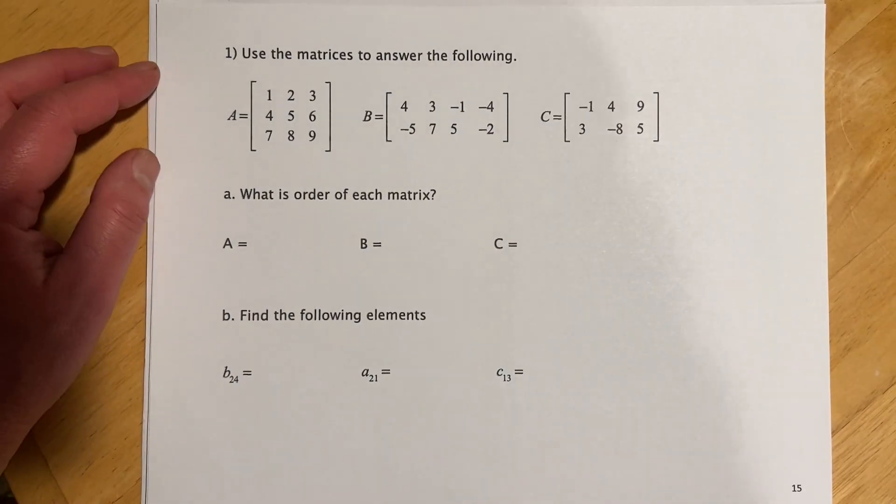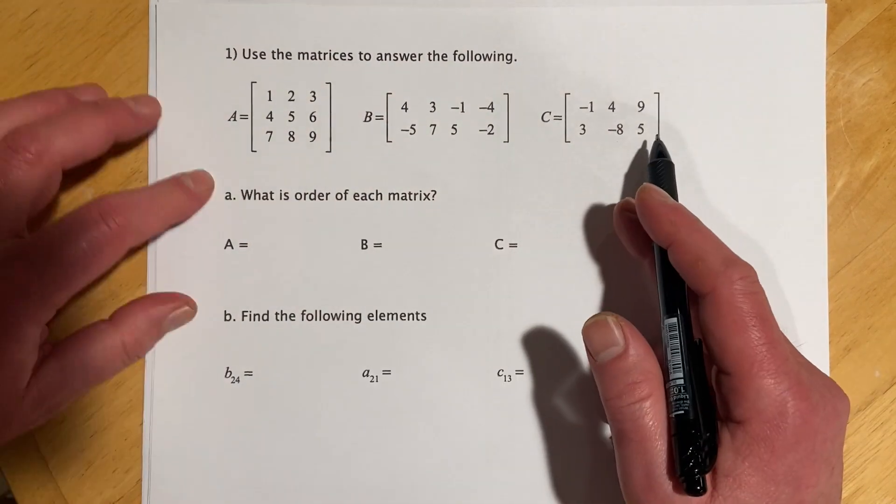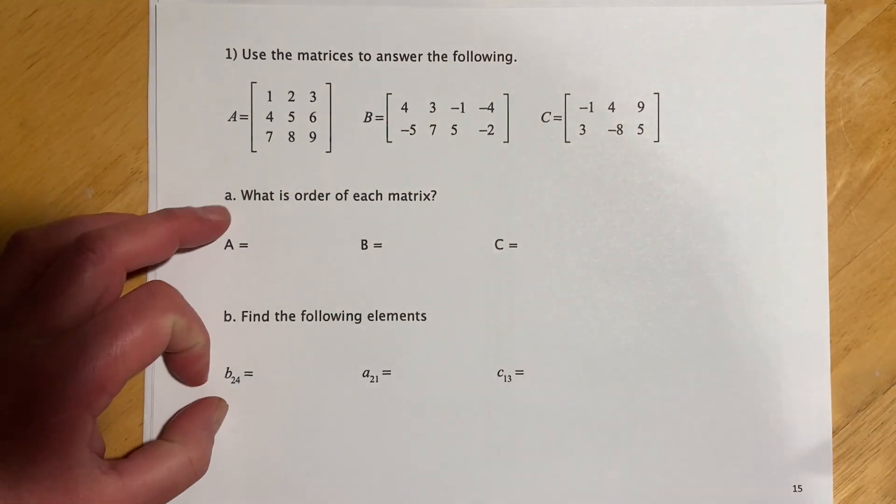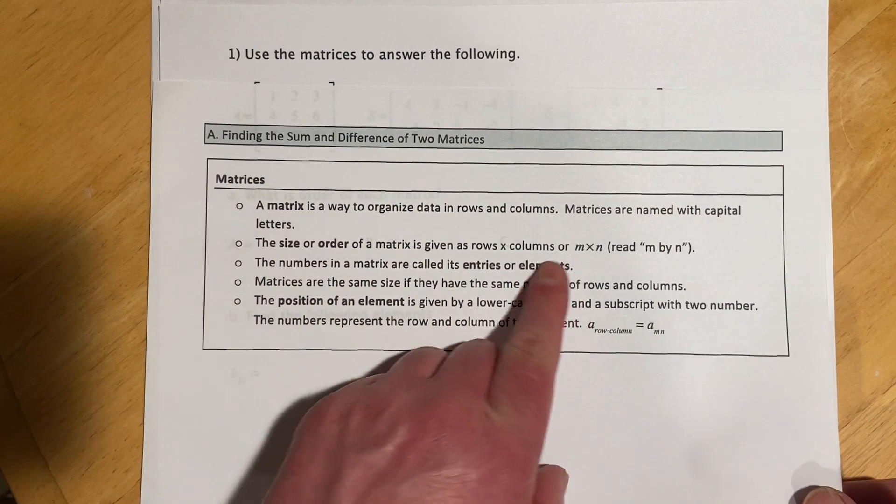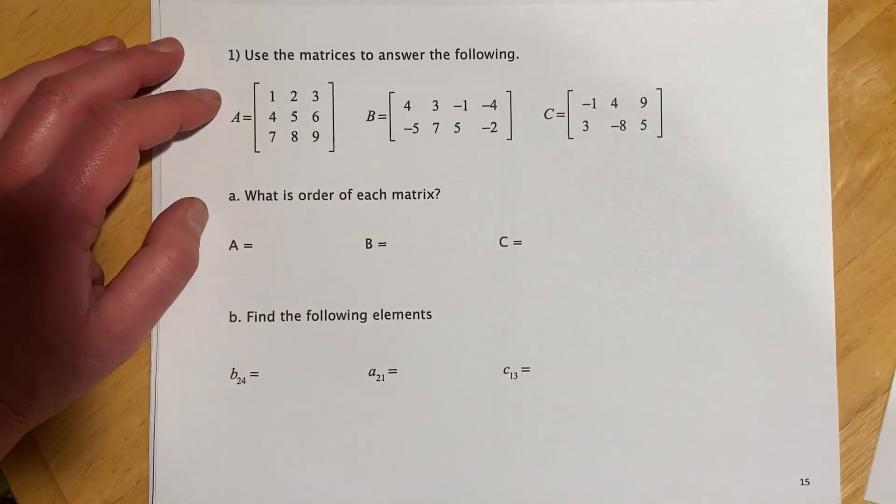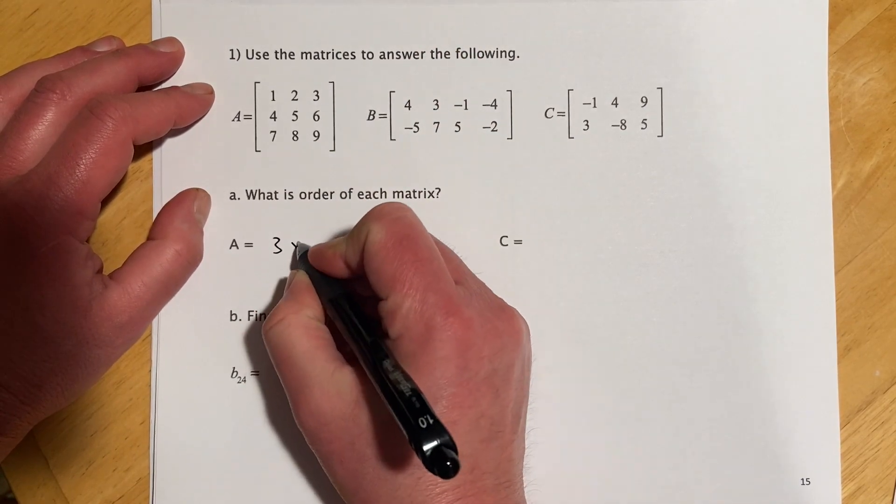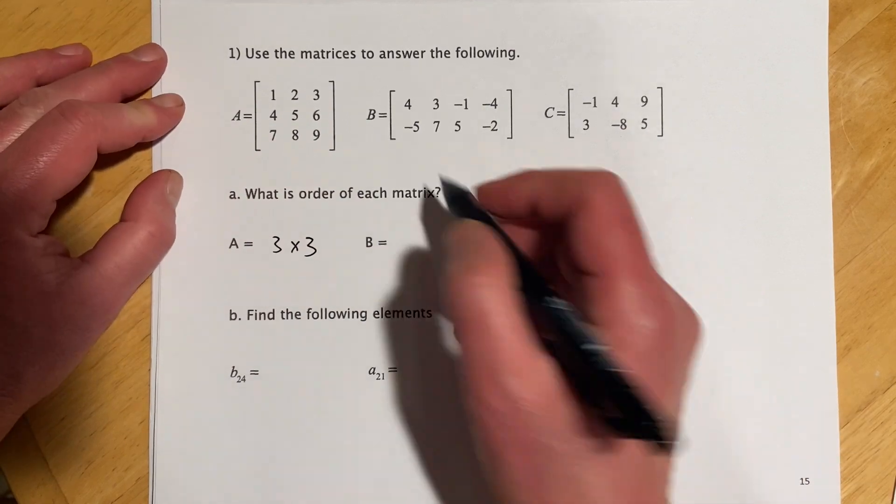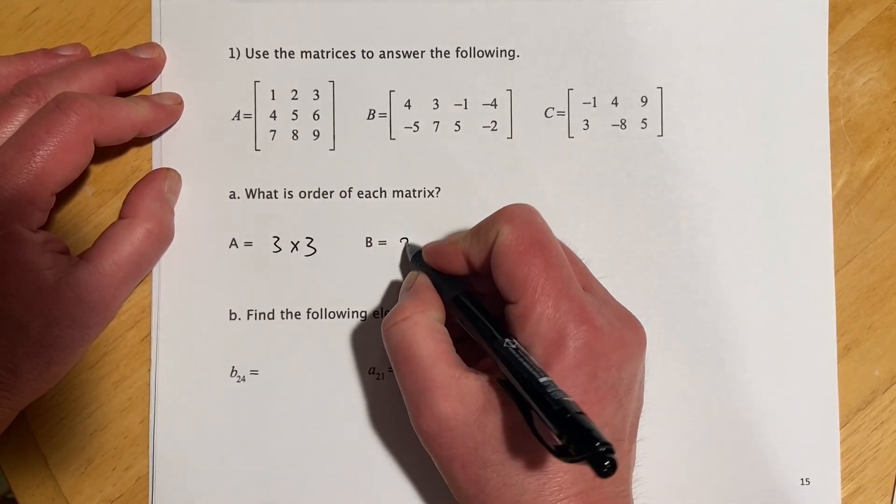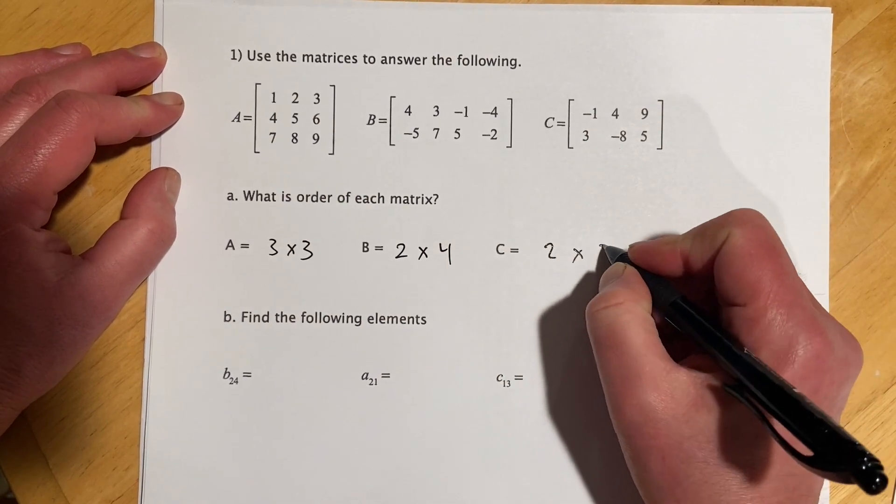Okay, so for this one, the first question, we're using these three matrices to answer these questions. So A is what is the order of each matrix? And so the size or order, again, that's our rows by columns. And so this has three rows by three columns. So this would be a three by three matrix. And notice we're using capital letter to denote the matrix. So this has two rows by four columns. And this one has two rows by three columns.